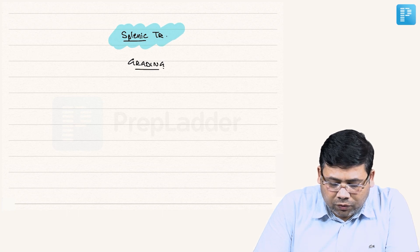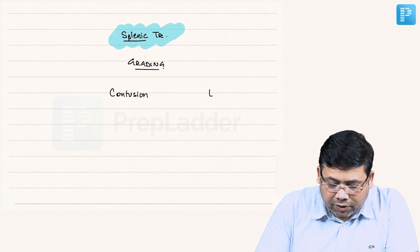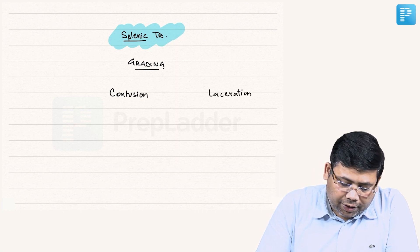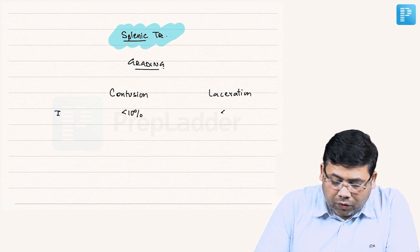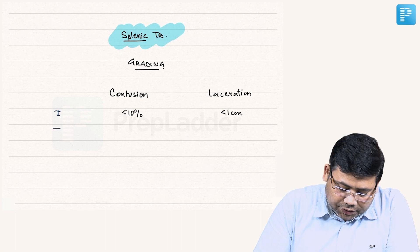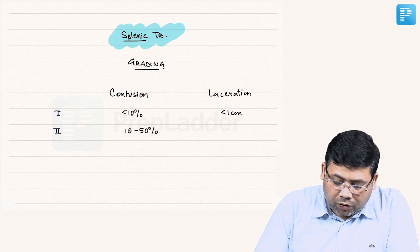In grading, we have to see it according to the contusion and the laceration, which are very important. Grade 1: less than 10% hematoma or less than 1 cm laceration. Grade 2: 10 to 50% hematoma or 1 to 3 cm laceration.